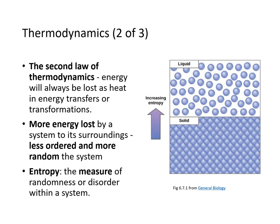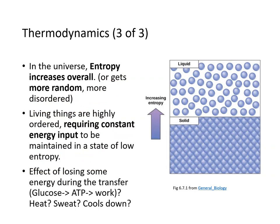The second law of thermodynamics states that energy will always be lost as heat in any energy transfer or transformation. As more energy is lost to the surroundings, the system becomes less ordered — more random. That randomness underlies the idea of entropy. Entropy is the measure of randomness or disorder within a system. In the universe, entropy increases overall, but living things are highly ordered, which is why they require constant energy input to be maintained in a state of low entropy.